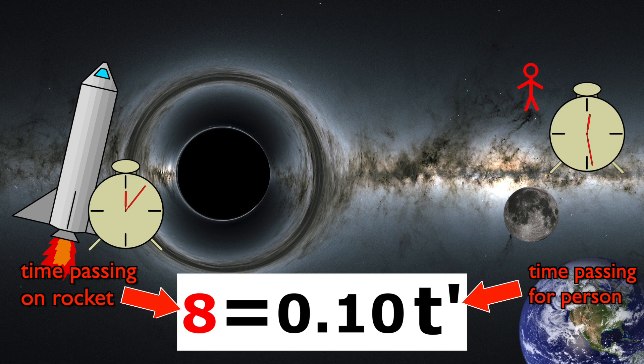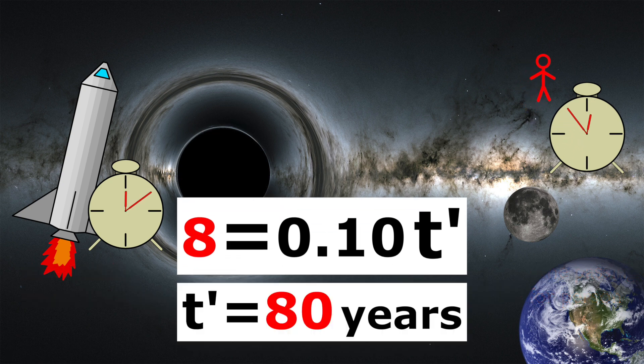So for an eight-year trip in orbit around the black hole, an entire human lifespan would pass by for the person in space.